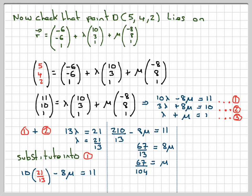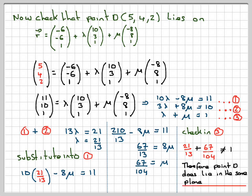Right. So now we've got a value of lambda and mu. If this point's on the plane, it's also got to work for the last value. So checking in equation 3, 21 over 13 plus 67 over 104 obviously is not equal to 1. So the conclusion is, because it didn't work out for the last one, then point D does not lie in the same plane. If it was to lie in the same plane, then these two here would have to be equal to 1 for it to work.